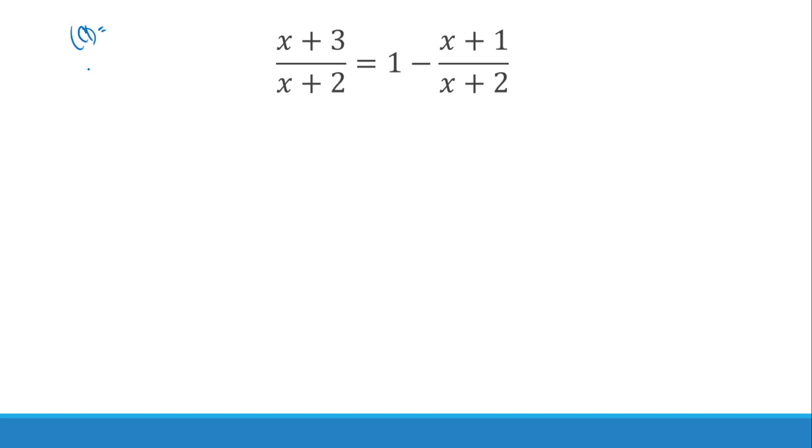My LCD here would be x plus 2. I don't need another one because it's already covered here, and this is not a fraction, so I don't have a denominator. So I'm going to multiply everything, including the 1, so every little piece of your equation gets multiplied by that common denominator. That's wonderful. Those cancel. That's just x plus 3. 1 times x plus 2 is just going to give you x plus 2. Now these will cancel that subtraction. Be careful with it every single time. This is minus x, and this is minus 1.